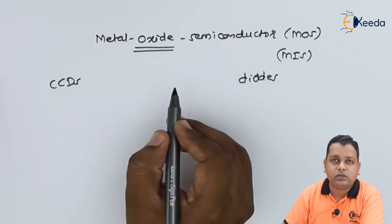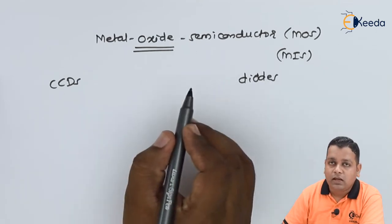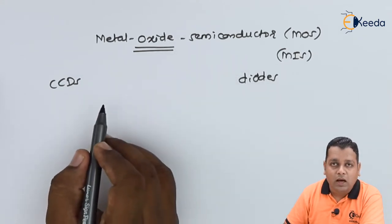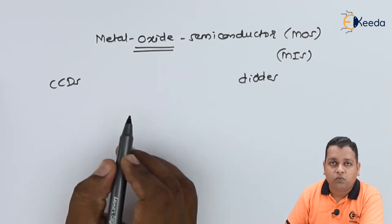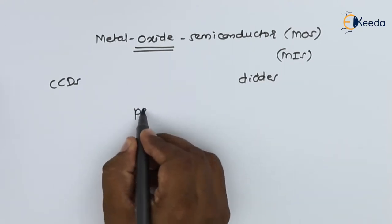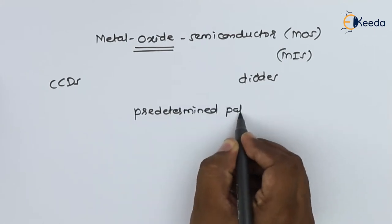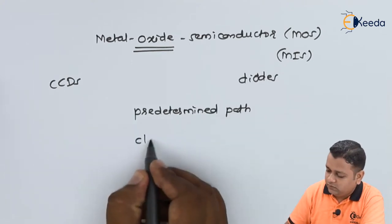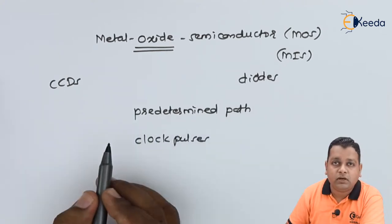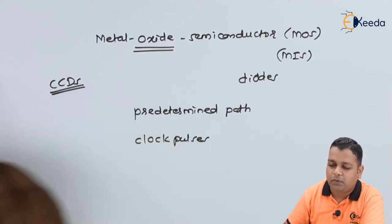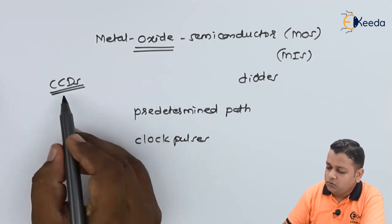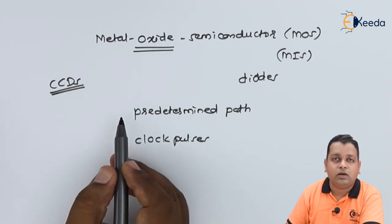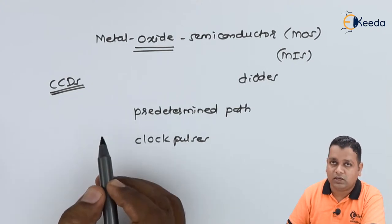What is the characteristic of these particular diodes? In the semiconductor structure formed by these three layers, the charge can be transferred with a predetermined path which is under the control of supplied clock pulses. This is simply the introduction we can give for Charged Coupled Devices. We shall see the operating mechanism next.